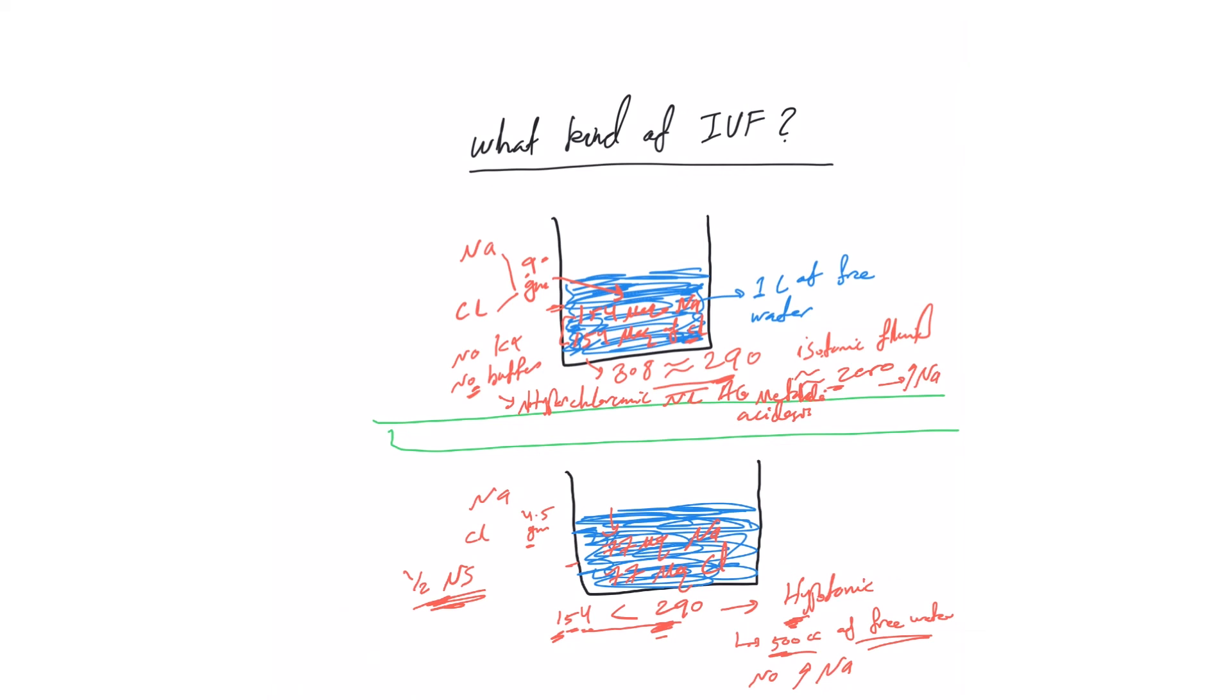There is no potassium in the regular solution and no buffer, but the risk of acidosis with this half normal saline is less compared to regular normal saline.